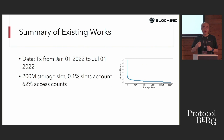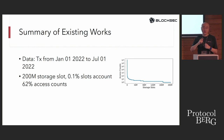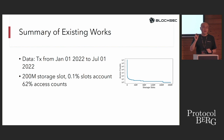We performed an empirical study using transactions from January 1st to July 1st of last year and observed storage operation conflicts. We found that access to storage slots is not equally distributed — there are obvious hotspots. Just 0.1% of storage slots account for more than 60% of all accesses, meaning these hotspot slots cause a large number of conflicts when executing transactions in parallel.